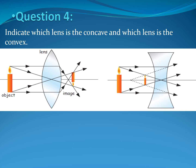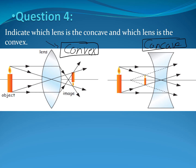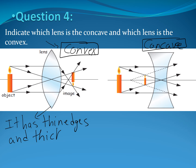Moving to question number four. Muhammad: indicate which lens is concave and which is convex. The first one is convex. What are the properties of a convex lens? It has thin edges and is thick in the middle. Excellent.